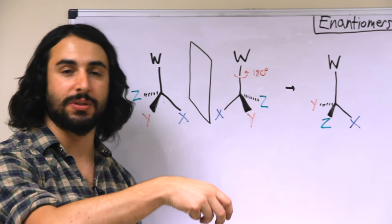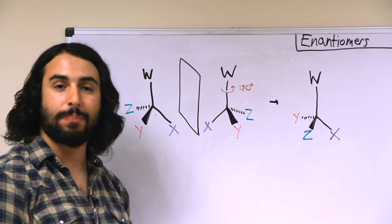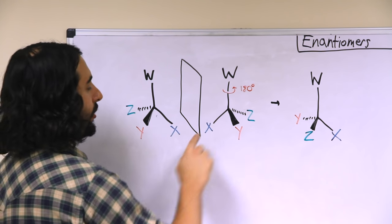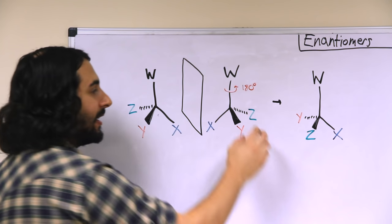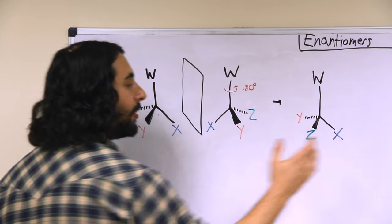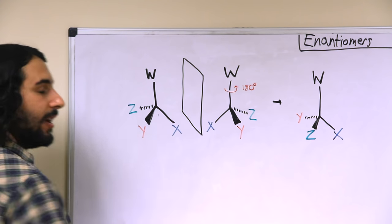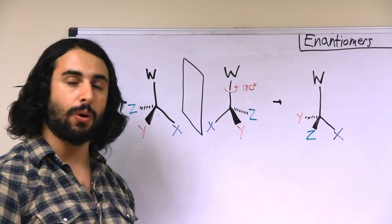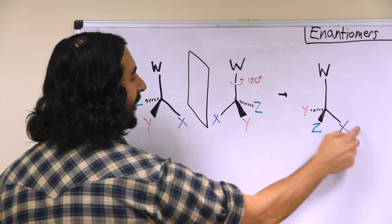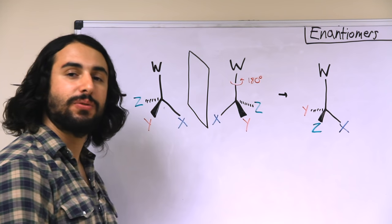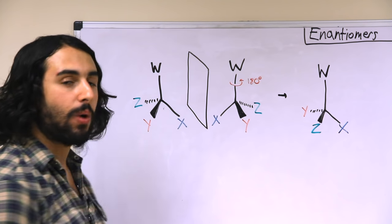But now, if we rotate the resulting mirror image to try to place it on top of the original. So in order to do that, if we want the X to line up, we are just going to twist this like a top 180 degrees and we would get this. But the problem is, if we try to take this and put it on top of that, not all of the atoms are going to overlap properly. So the W, the central atom and the X, those would overlap just fine. But you'd find that the Y would be on top of the Z and the Z would be on top of the Y.